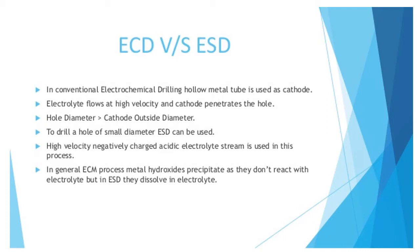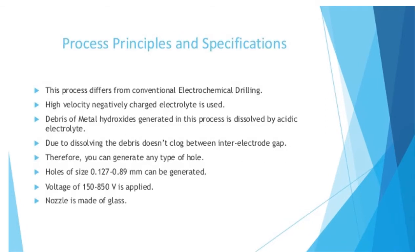For drilling a hole of small diameter, ECD can be used. This is electro stream drilling. A high velocity, negatively charged acidic electrolyte stream is used in this process. In a general ECM process, metal hydroxide precipitates as it does not react with the electrolyte, but in ECD it dissolves in the electrolyte.